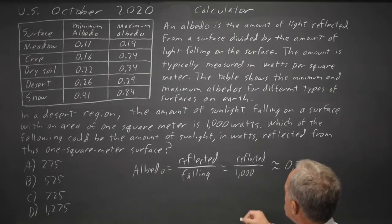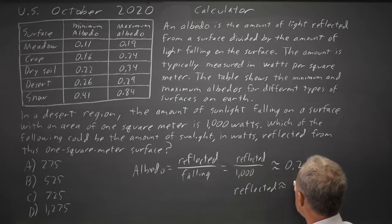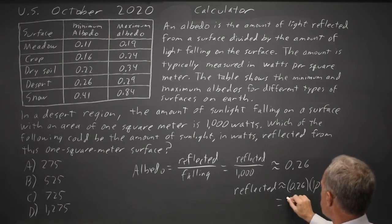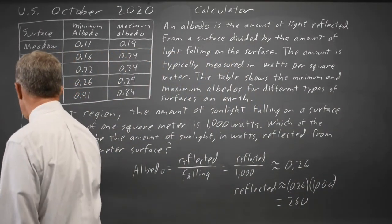If I multiply both sides by 1,000, reflected over 1,000 times 1,000 is reflected. And that is about 0.26 times 1,000, which is about 260, and the answer closest to that would be 275. Choice A.